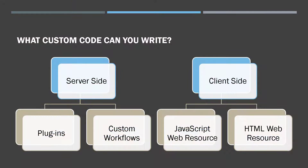To understand that better, let's understand what kind of custom code you can write. There are two types of custom code: server-side custom code and client-side custom code. In the server-side, you can write something such as plugins or custom workflows. Whereas on the client-side, you can do JavaScript, web resources, HTML web resources, or even CSS web resources.